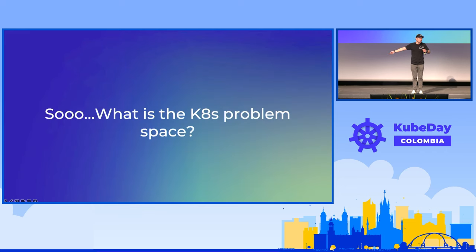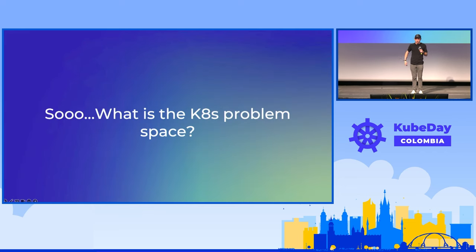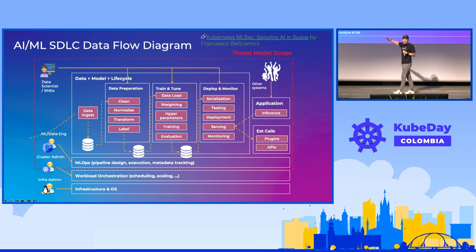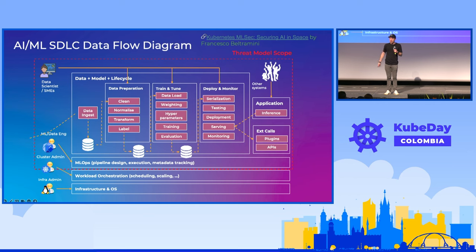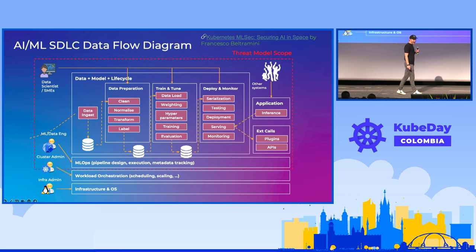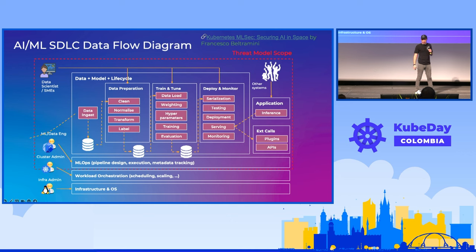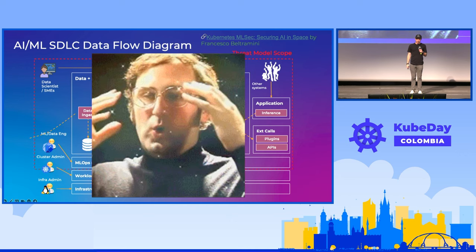What's the problem space for Kubernetes? Here is an SDLC data flow diagram for how we might do an end-to-end training for a statistical model on Kubernetes. As you can see, there are a lot of moving parts here, and it might be mind-blowing for some of us.